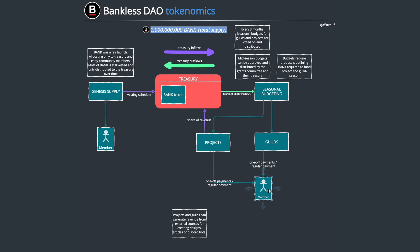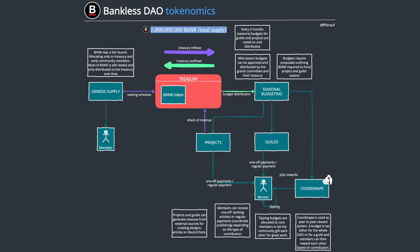Some projects — and maybe even some guilds — have revenues coming from outside. For instance, there's a project called Client Services that writes articles for clients like Maker and Citadel DAO. These are often paid in USDC, not in BANK tokens, and a share of that revenue goes to the Bankless DAO treasury, which helps diversify it and fund more initiatives.